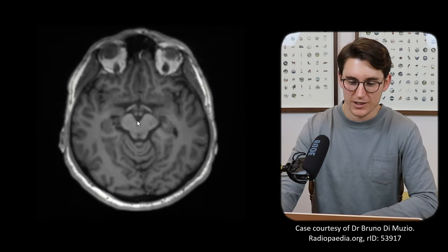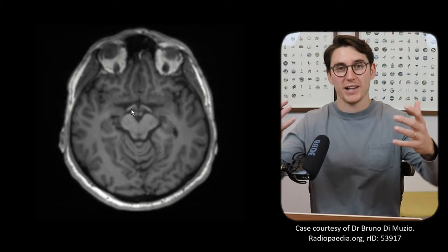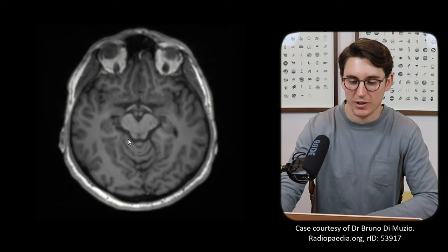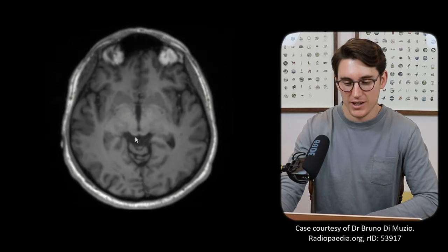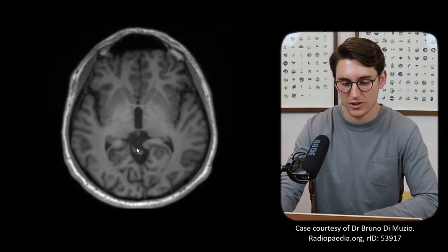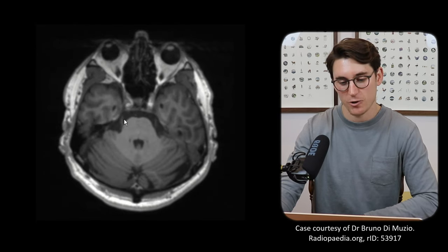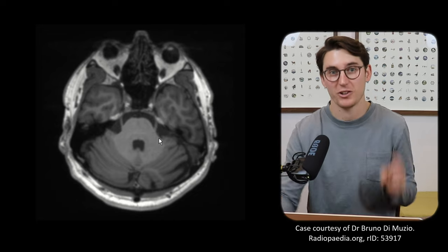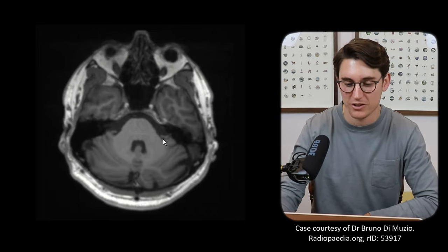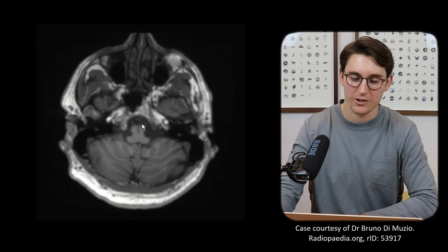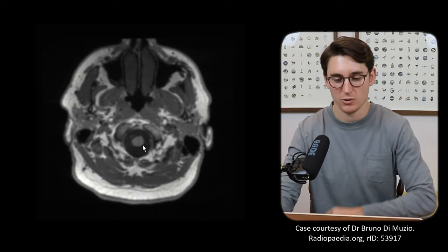Coming back up to the level of the midbrain, we can see our cerebral peduncles — so this is our interpeduncular cistern. Our ambient cistern surrounds the midbrain — like ambient temperature, surrounding temperature — coming across to our quadrigeminal cistern where we can see our superior colliculi and inferior colliculi below them. Posterior to that is our superior cerebellar cistern. Heading down into the pons, we can see our prepontine cistern and our cerebellopontine cistern — you can see our trigeminal nerve coming out there. If you don't know where those go, have a look at our skull base foramina video. Heading down into the medulla oblongata, we've got our premedullary cistern, our cerebellomedullary cistern, and then heading down into the cisterna magna at the bottom with our spinal cord heading further down.